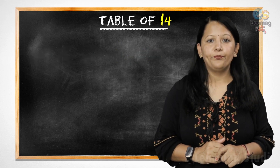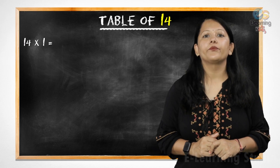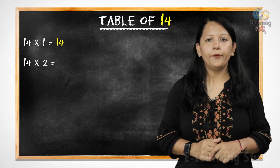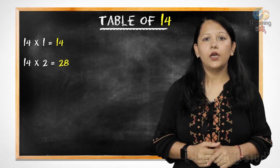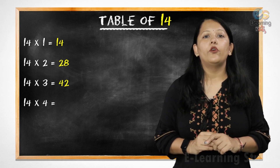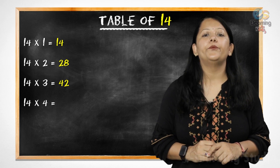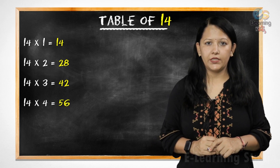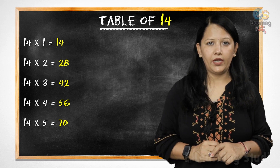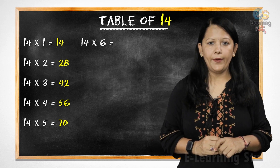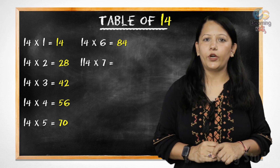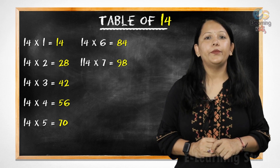Now let's revise it. 14 ones are 14, 14 twos are 28, 14 threes are 42, 14 fours are 56, 14 fives are 70, 14 sixes are 84, 14 sevens are 98.